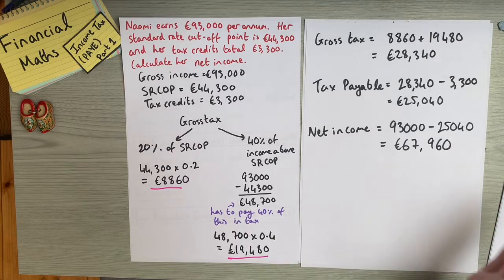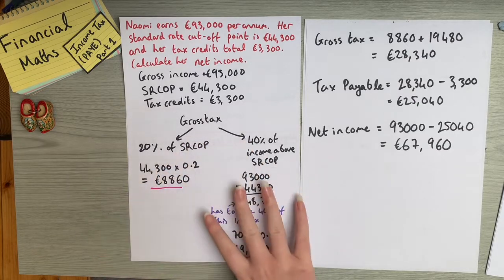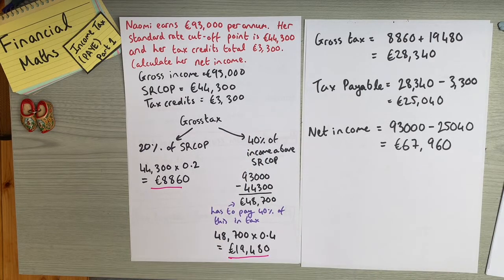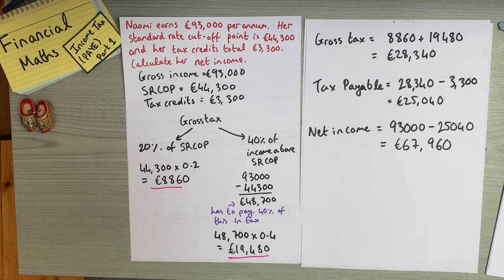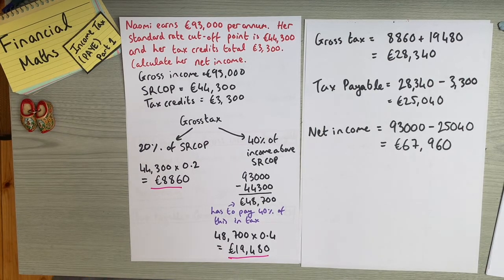The 20% standard rate and 40% higher rate system means taxes are varied — someone earning half of what Naomi earns won't pay nearly as much in tax. It's a way of scaling tax based on gross income, and your standard rate cutoff point depends on your individual circumstances. In the next video on income tax, we'll look at PAYE again but in cases where you need to use algebra and rearranging to solve the problem.